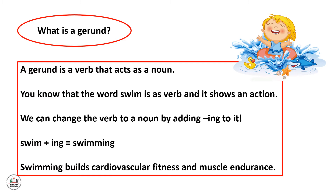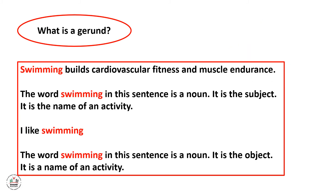Swimming builds cardiovascular fitness and muscle endurance. The word 'swimming' in this sentence is a noun — it is the subject and it is the name of an activity. In the second sentence, 'I like swimming,' the word 'swimming' is also a noun — it is the object and it is the name of an activity.